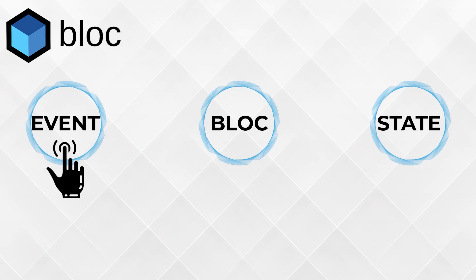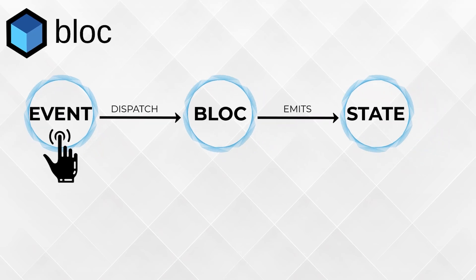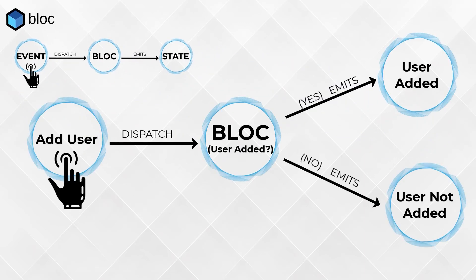First, we trigger the event. Let's say we trigger the add user event. What happens is the event emits the state according to our logic. For example, if the user is added successfully, then it emits the state 'user added', else it will emit the state 'user not added'.